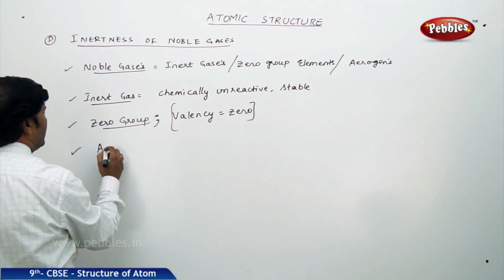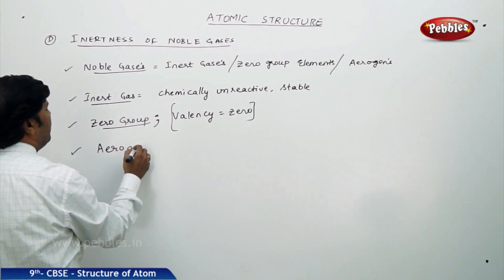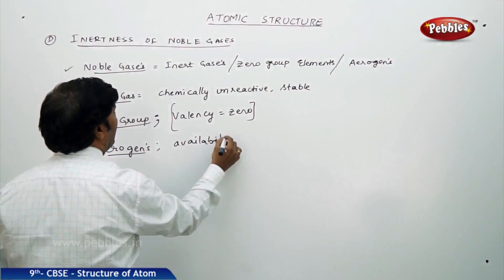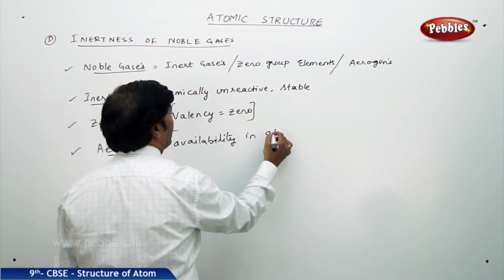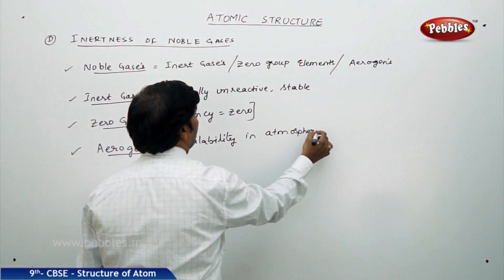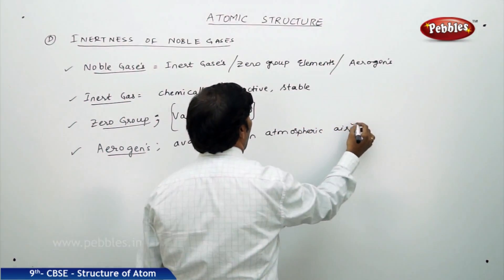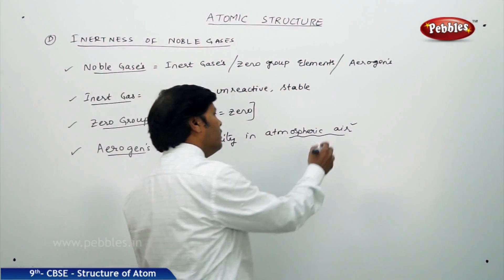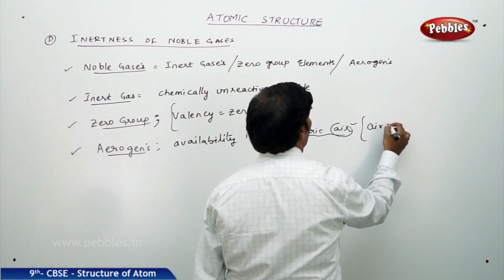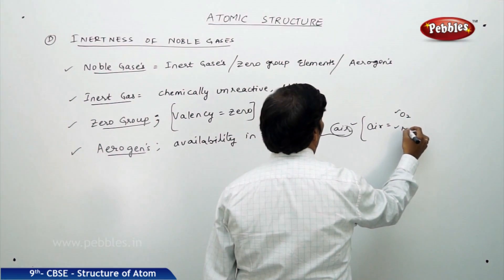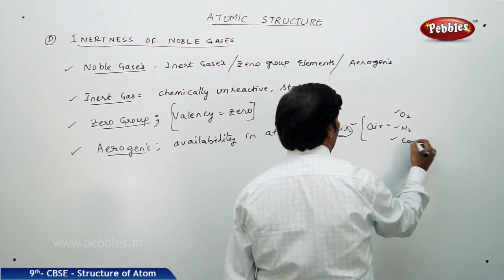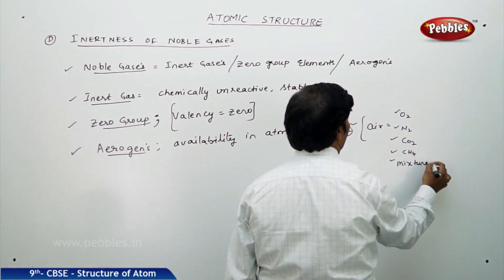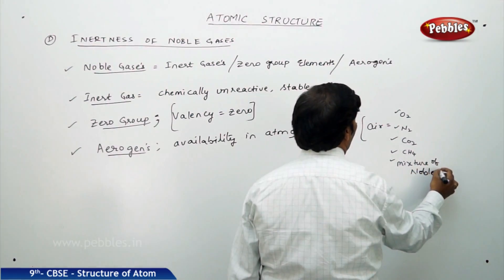We call them erogens because of their availability in atmospheric air. Air is a mixture and it contains oxygen, nitrogen, carbon dioxide, hydrocarbons such as methane, and a mixture of noble gases. This is the composition of air.